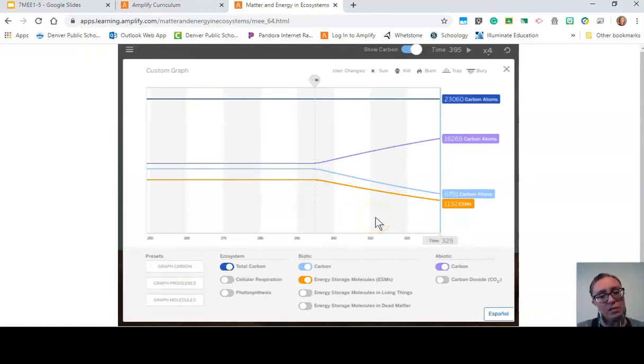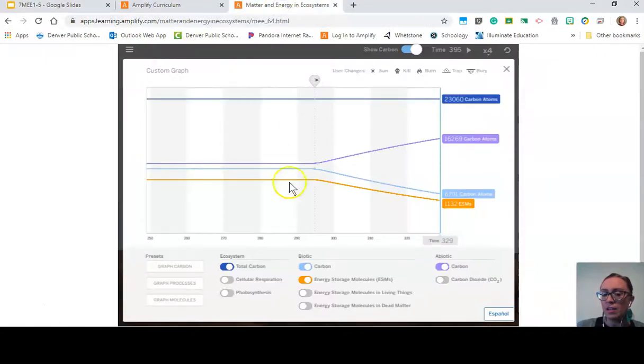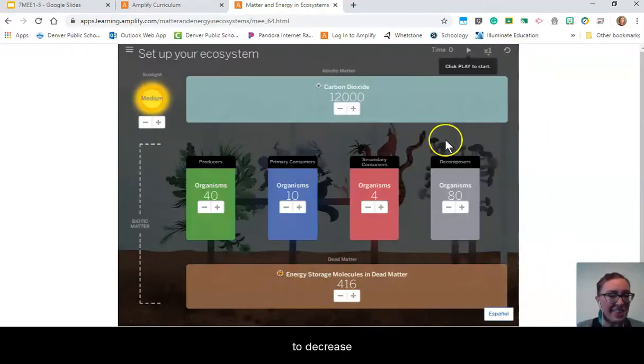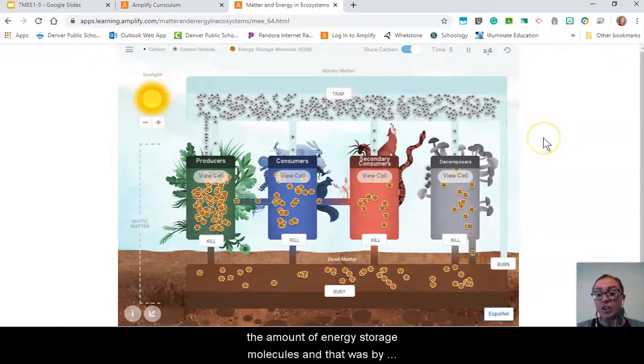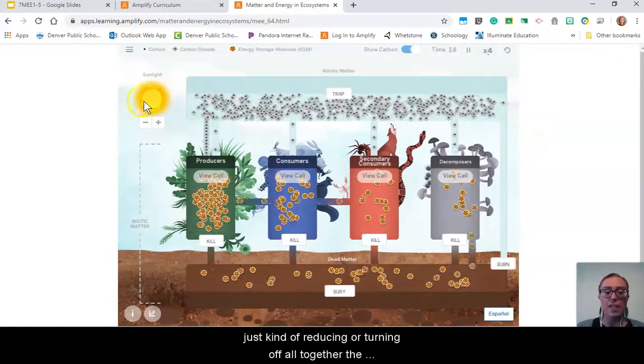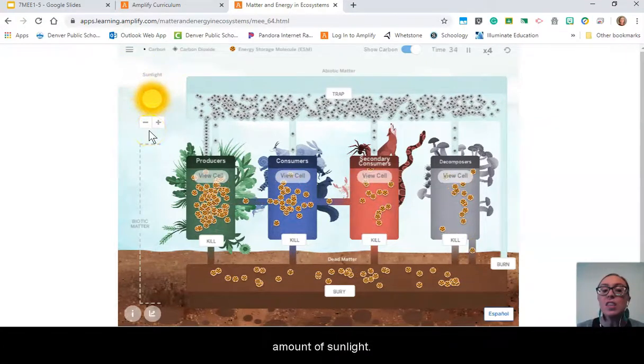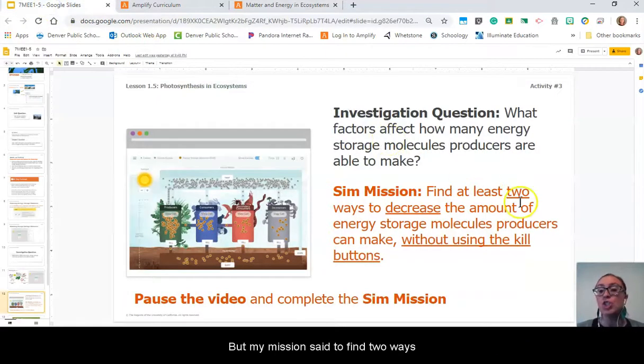What do you notice happened? What does that mean about our mission? Let's restart. I'm going to hit reset. I think I found one way to decrease the amount of energy storage molecules, and that was by reducing or turning off altogether the amount of sunlight. But my mission said to find two ways.